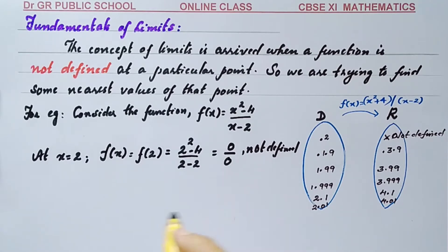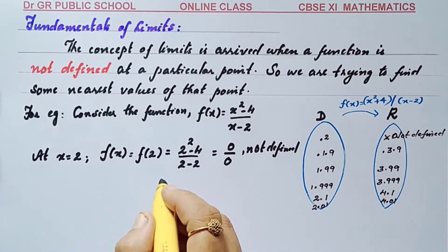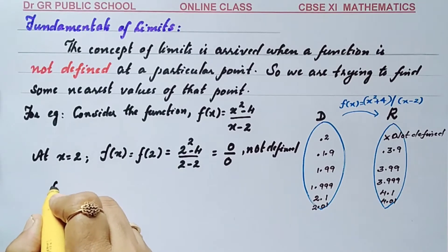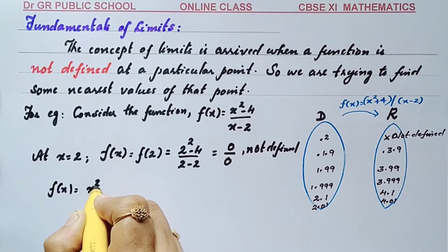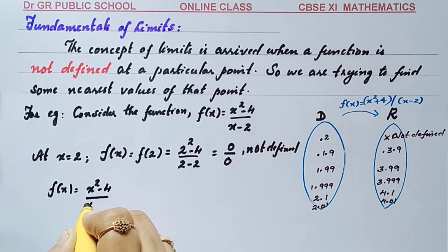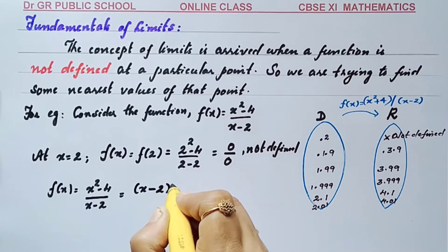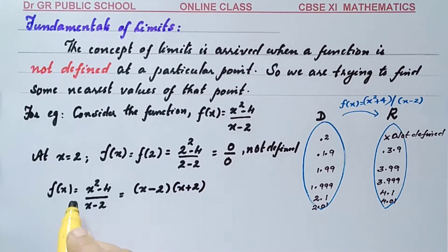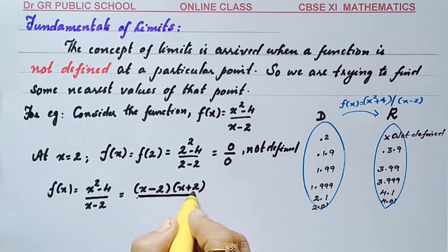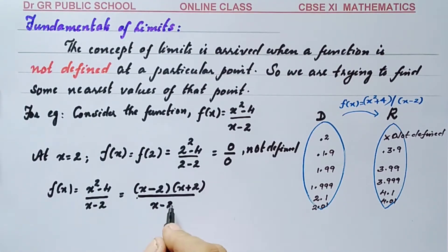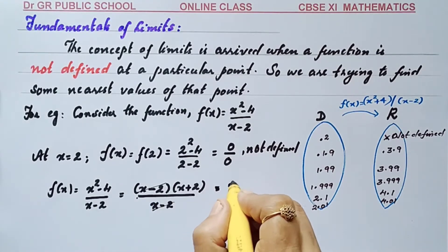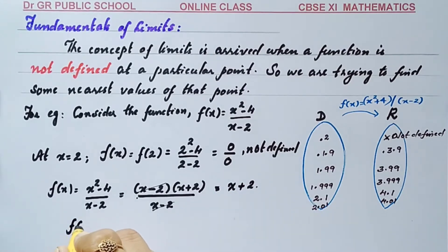I am going to make a further simplification. The given f(x) equals x squared minus 4 divided by x minus 2 can be rewritten by factoring the numerator as (x minus 2)(x plus 2) divided by (x minus 2). The factor x minus 2 cancels, leaving f(x) equals x plus 2.